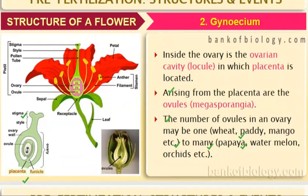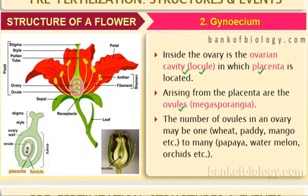Inside the ovary is the ovarian cavity called the locule, in which the placenta is located. The ovary cavity is filled with the placenta. Arising from the placenta are the ovules. This whole bulged-out part of the pistil is the ovary. The locule is the cavity, and the pink part shown is the placenta.